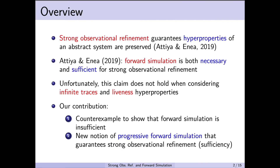The overview of this talk is as follows. We're interested in the preservation of security properties that can be expressed using the hyperproperties framework described by Clarkson and Schneider. In their 2019 DISC paper, Attia and Enea defined a notion of refinement called strong observational refinement, which strengthens the traditional notion of refinement so that hyperproperties of abstract systems are preserved as we work towards an implementation.